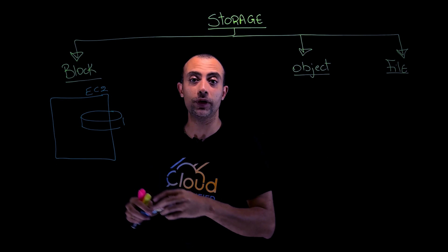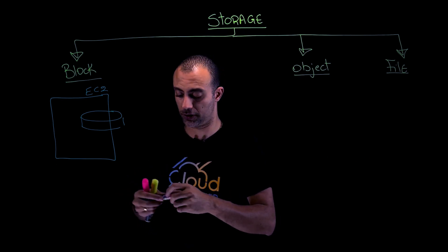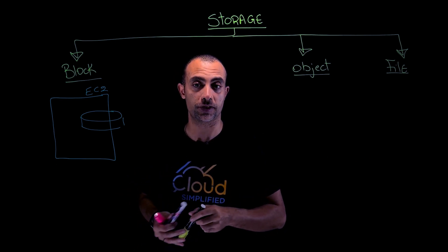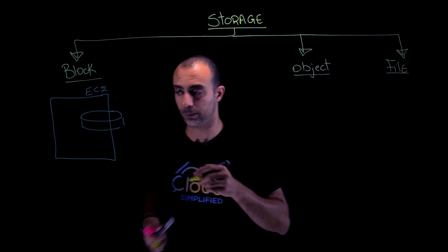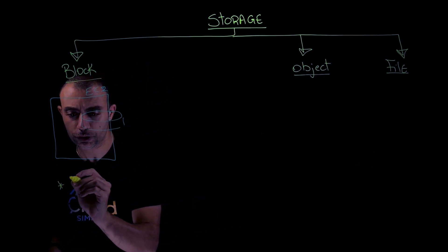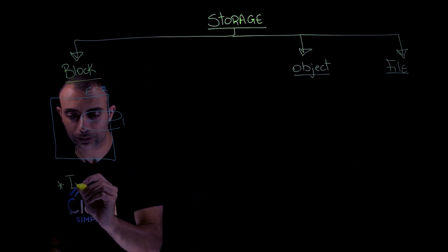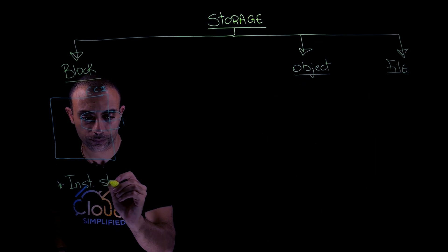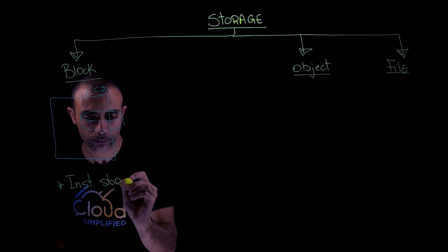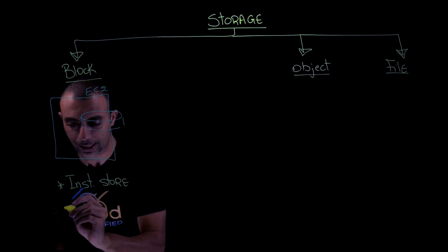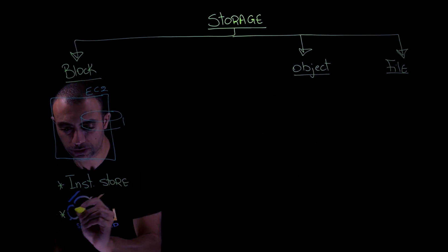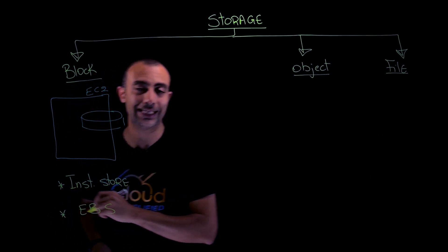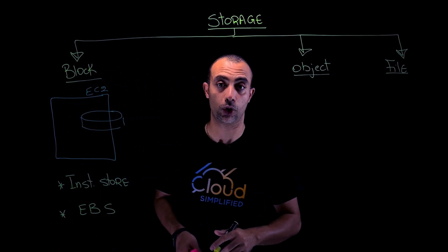Here we have two types of services, or two options, that we can deploy. The first service is called Instance Store, and the second service is called EBS, which stands for Elastic Block Store.